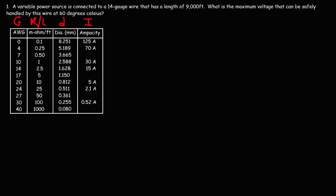Looking at the relationship between wire gauge and resistance: as was mentioned, as the gauge number increases, the resistance per unit length increases. Notice that when the gauge increases by 3, the resistance doubles. For example, going from gauge 4 to 7, the resistance per unit length goes from 0.25 to 0.50. And going from 17 to 20, the resistance doubles from 5 to 10. So every time the wire gauge increases by 3, the resistance per unit length increases by a factor of 2.